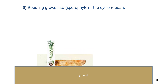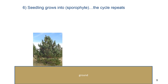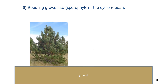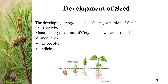The seedlings then grow into sporophytes, and in this way the cycle repeats. The developing embryo occupies the major portion of the female gametophyte. The mature embryo consists of cotyledons surrounding the shoot apex, the shoot hypocotyl — which is the part of the stem beneath the seed leaves and directly above the root — and the radicle.